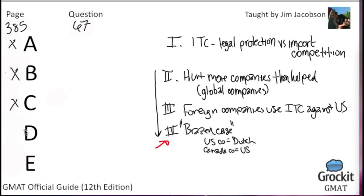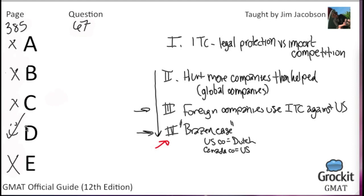D: companies that are not United States owned may seek legal protection from import competition under United States import relief laws. That's exactly what happens in paragraph four in the specific example, and paragraph three stated that as a general concept, so that sounds really good. E: companies in the United States that import raw materials may have to pay duties on those materials — raw materials are never mentioned. So yeah, it's definitely D: that foreign companies based in the US can seek import protection, potentially against other international companies.